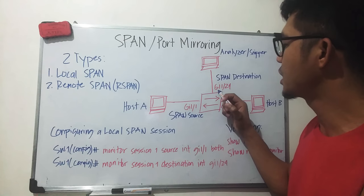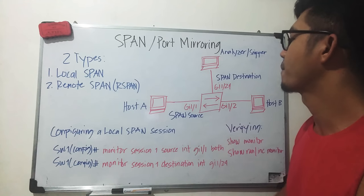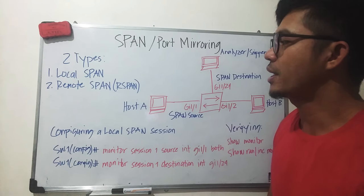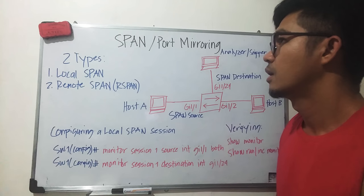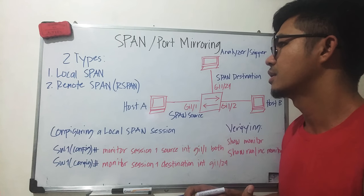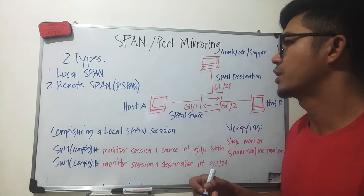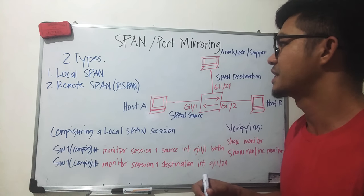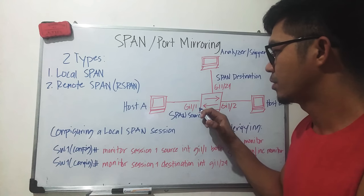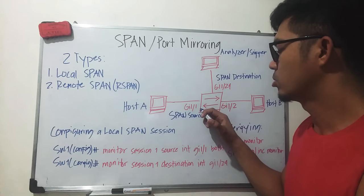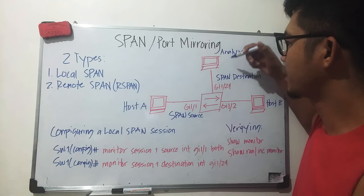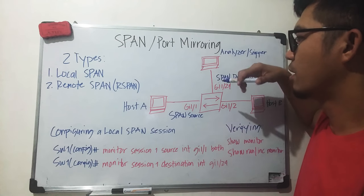Remote SPAN is where your source port is located on a different switch than your destination port. For example, your source port is on one switch, which is connected to another switch, and that switch is connected to yet another switch. That's why it's called remote SPAN.